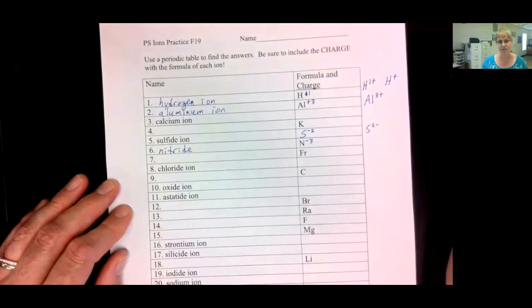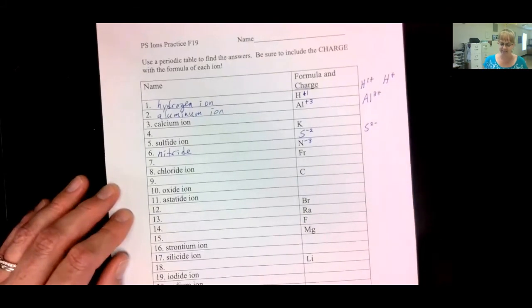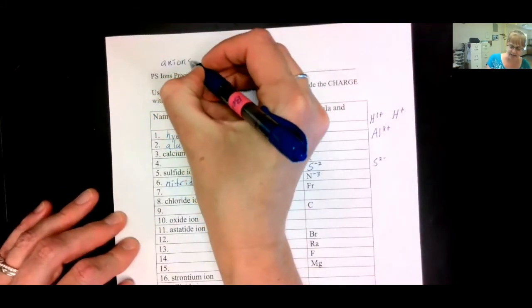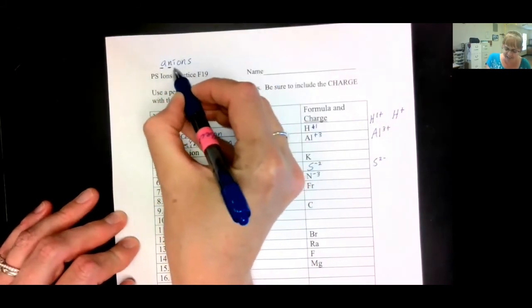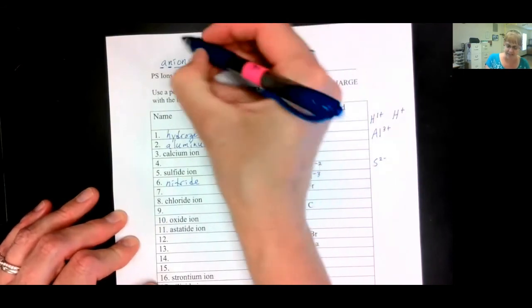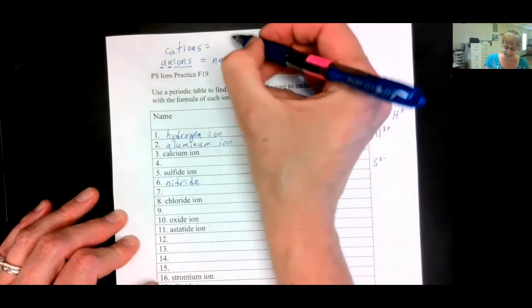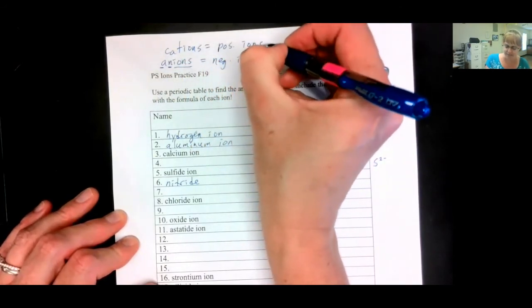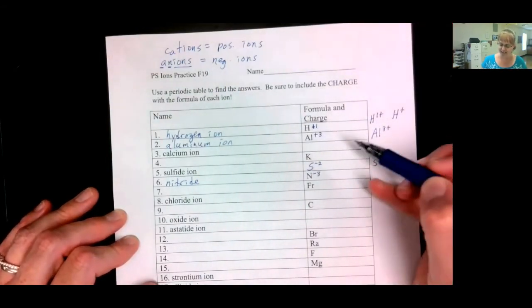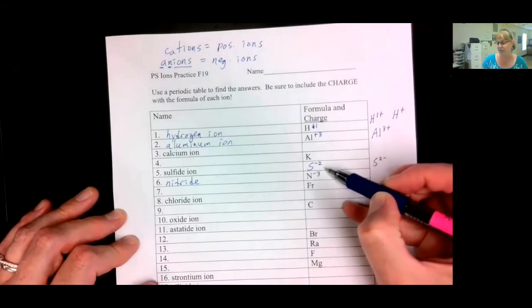Positive ions are known as cations. Cats are positive. I like cats. So, cations are positive ions. And anion is a negative ion. Anions are spelled A-N-I-O-N-S. And it kind of spells it. A negative ion. And then, as we said, cations. It looks like cations, but it's not. It's cations are positive ions. So, this is a hydrogen cation, an aluminum cation, and a sulfide anion. If you want to be even more particular.